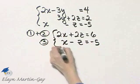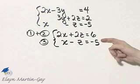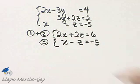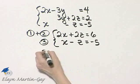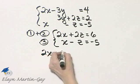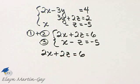Now treat this as a system of two equations in two unknowns and let's solve this system. To do so, I'll write the first equation down again, two x plus two z is equal to six.